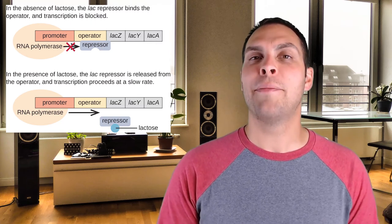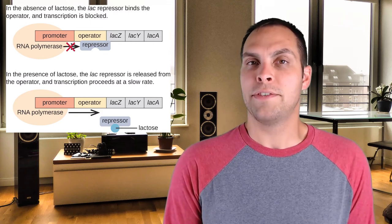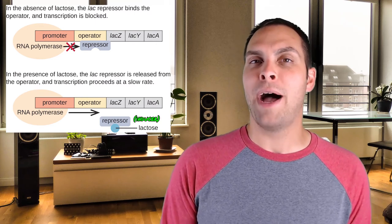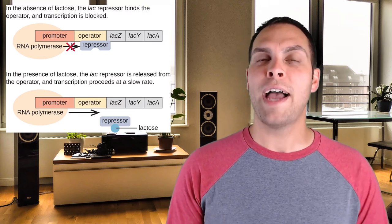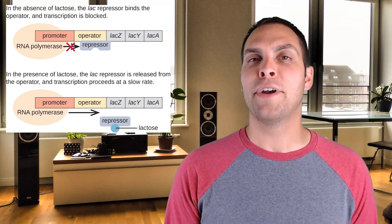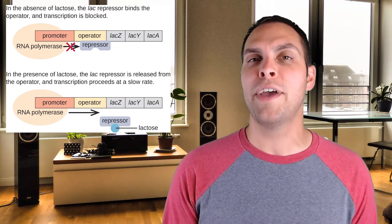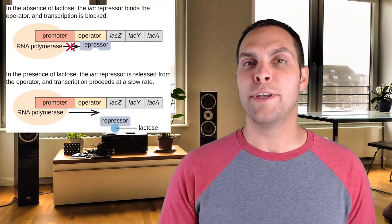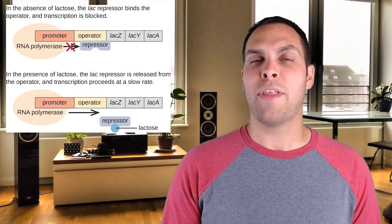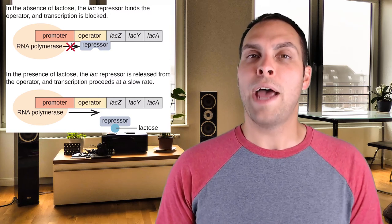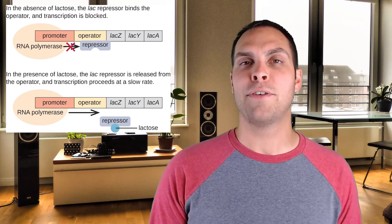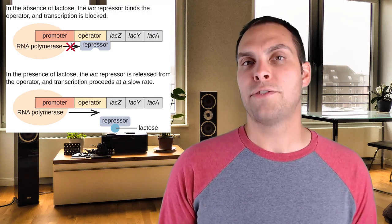When lactose is available, it acts as an inducer. An inducer is a chemical that, when binding to a repressor, inactivates it. Lactose — or its closely related chemical allolactose — binds to the lac repressor, converting it to its inactive conformation so it can no longer bind to the operator. That allows RNA polymerase to bind to the promoter, transcribe those three enzyme genes, and the cell can use lactose as an energy source. Over time, the lactose is degraded, allolactose is no longer around, and the lac repressor returns to active conformation, shutting down transcription again.